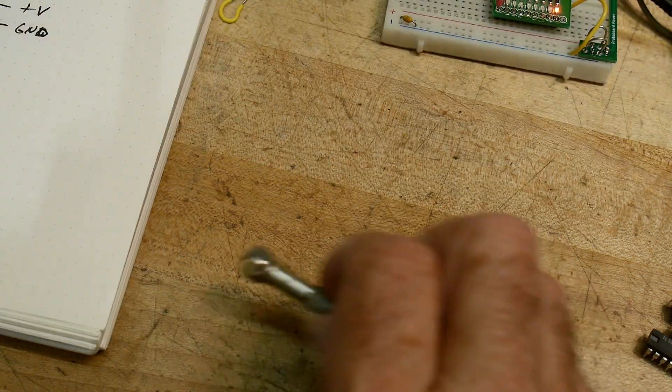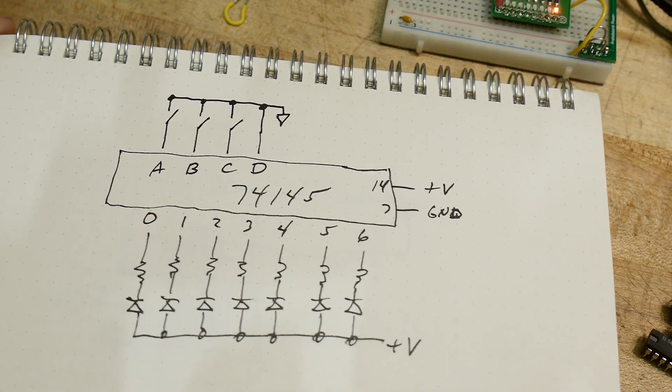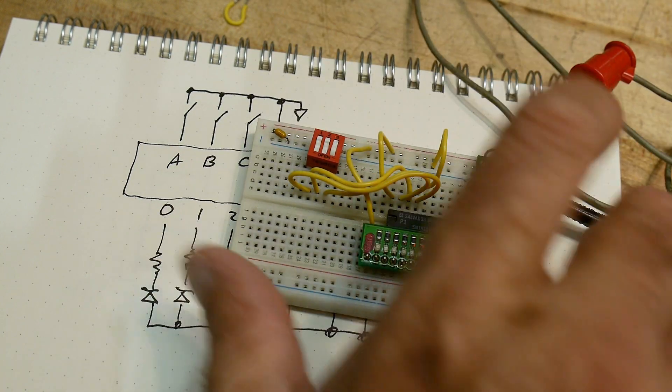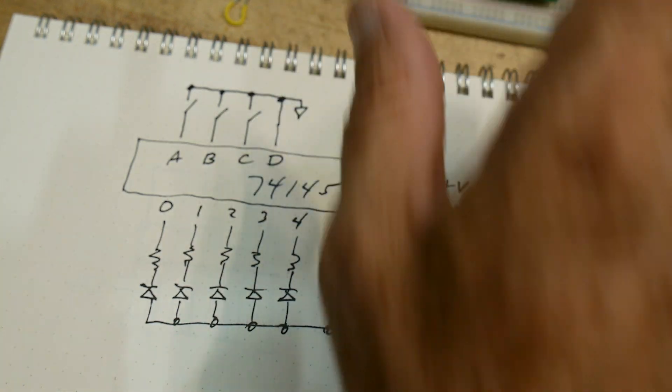So there you go. Chip of the day is a 74145. This one happens to be an LS version but it doesn't matter. They all act the same.